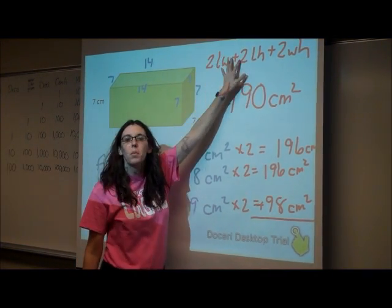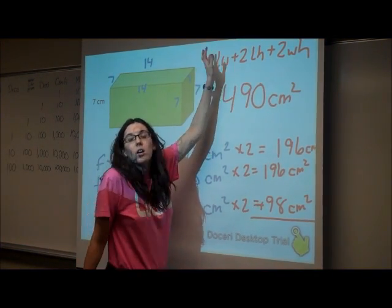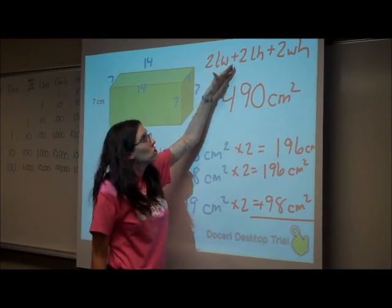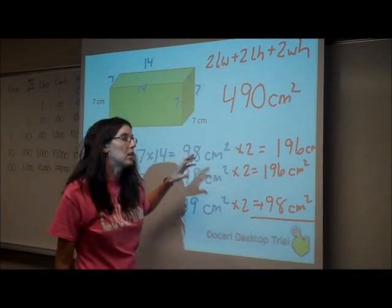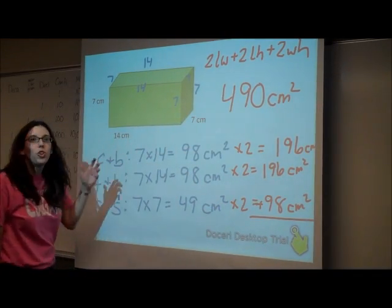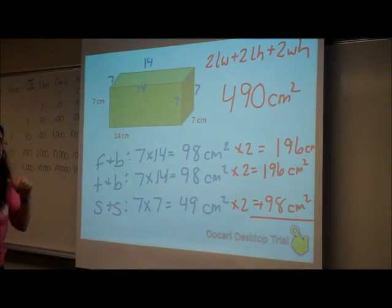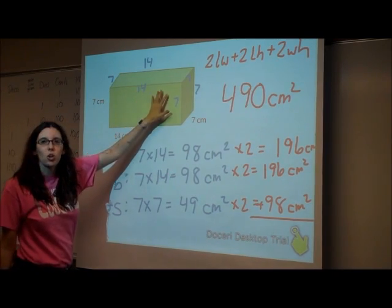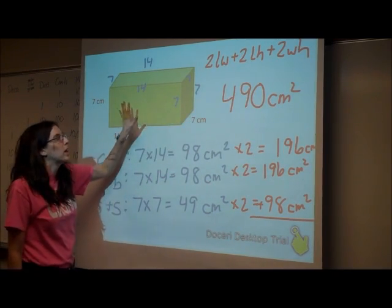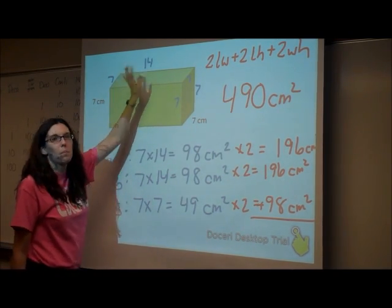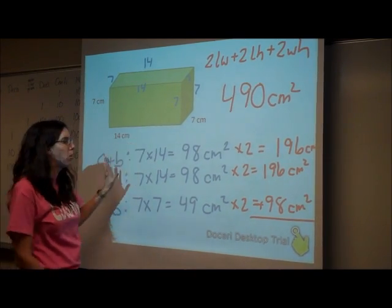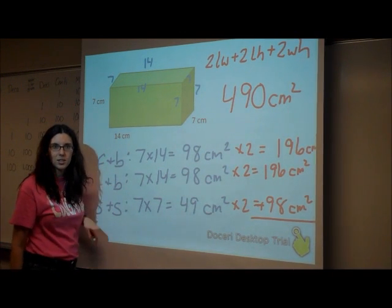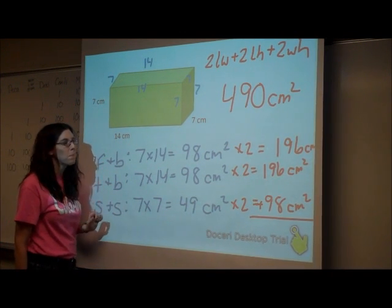If you can remember the formula, memorize it and plug in your length, width, and height. If you're not good at remembering formulas, just go through and think: I need to find my front and my back, my top and my bottom, then go through and look at the sides.